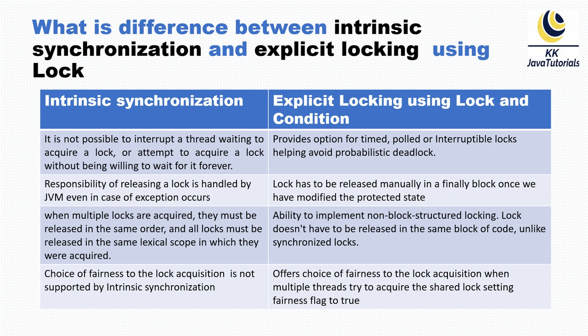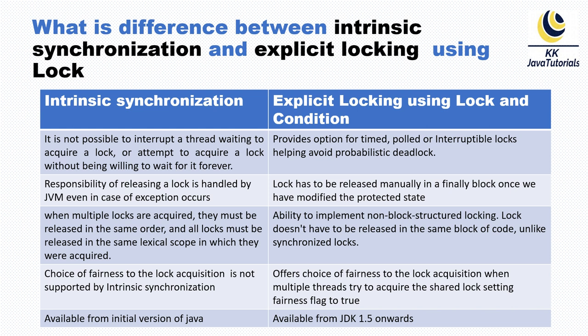The fourth difference relates to fairness. Intrinsic synchronization does not support a fairness choice for lock acquisition. With explicit locking, however, you can set a fairness flag when multiple threads try to acquire a shared lock. When creating an instance of ReentrantLock, the constructor accepts a fairness flag — setting it to true maintains fairness in lock acquisition, giving every thread a fair chance to acquire the lock.